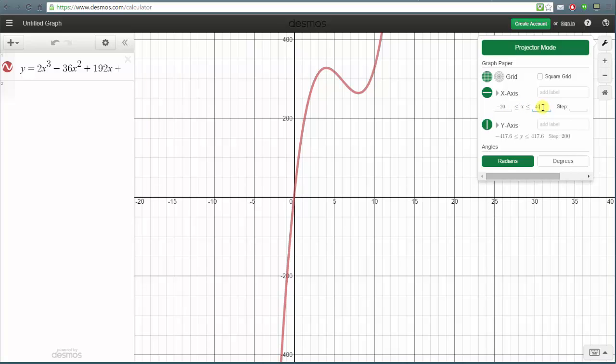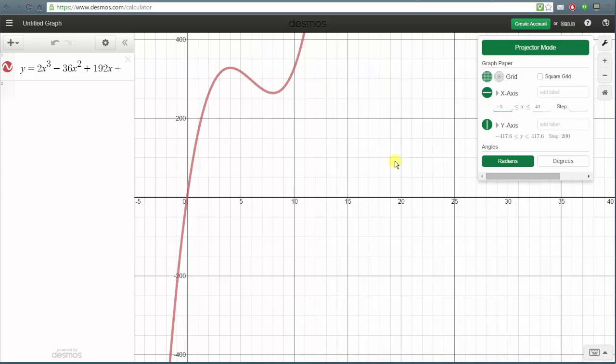Now if we didn't like this interval we could change it and again it would automatically show. So let's go ahead and change the x min to negative 5 and the x max to 15. So it's nice that we can actually see the graph while we adjust the window at the same time.